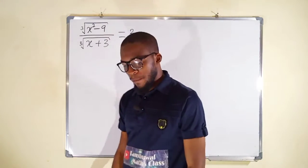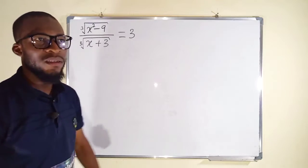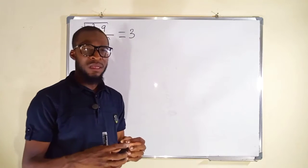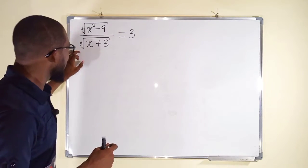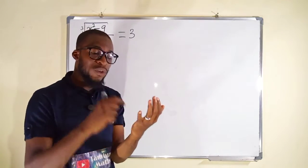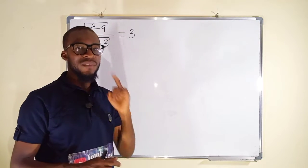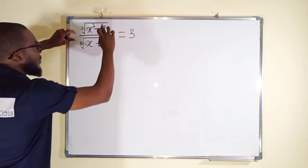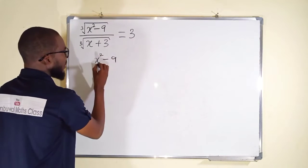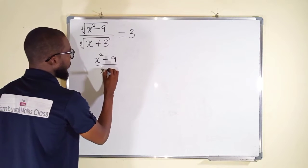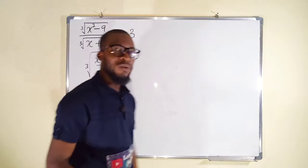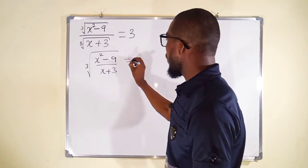Let me try the first way. The left-hand side is a surd expression. While dealing with surd expressions that have the same root — you can see this is cube root and this is also a cube root — whether they are linked by division or multiplication, you are always free to give them a single root. So instead of leaving them in this form, we give them a single root: x squared minus 9, divided by x plus 3, all under the cube root. This is one of the laws of surds, and to the right we still have 3.